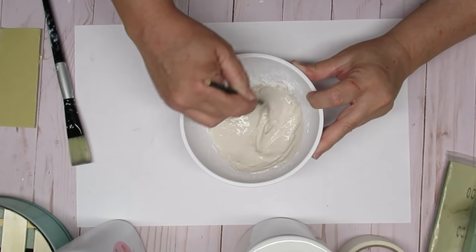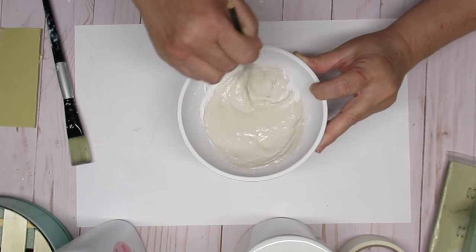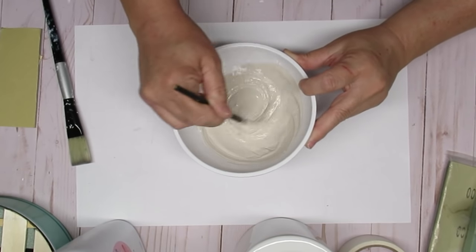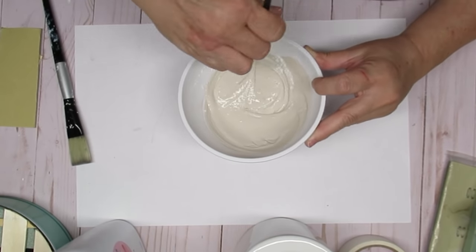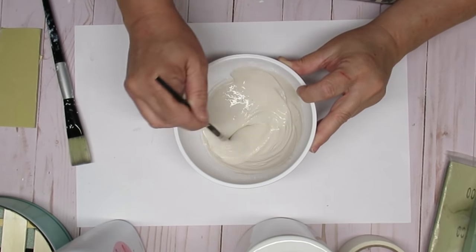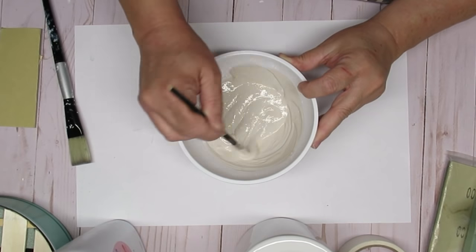I am really bad at measuring, so I'm going to say it's a two to one ratio, which is what I have in my recipe. So two parts paint to one part talc, and you're going to just mix it until you get a really nice thick consistency like a chalk paint would be.